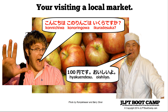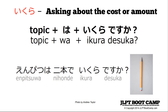You're using Ikura. This is a question word used to ask about the cost of something or amounts. Very often, almost exclusively, it's used to ask how much something is or how much money you have — it's almost always used for money. At the N5 level, it'll probably be used to ask about money. The structure is: topic plus wa, the topic-marking particle, plus ikura desu ka. The topic is the item you want to know the price of.